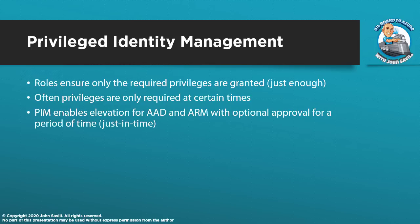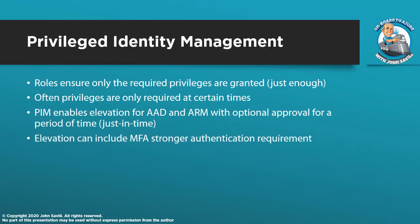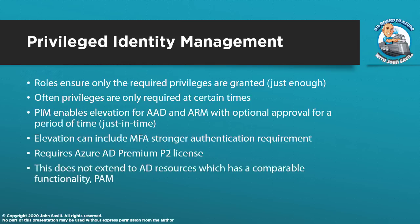PIM provides optional approval, ticket number entry, and comment requirements — giving just-in-time capability. The elevation can include an MFA stronger authentication requirement. For many Azure AD roles you can't turn that off. If I already authenticated with strong authentication, I don't have to MFA again, but if not, it will make me MFA. For Azure Resource Manager roles, I can configure whether I want stronger authentication if I didn't already have it in my token. This does require an Azure AD Premium P2 license, available as part of SKUs like E5 flavors. Note this does not extend to Active Directory resources, which has its own elevation capability for privileged access management.